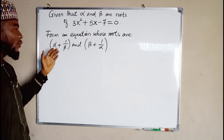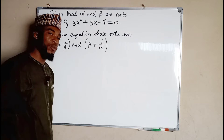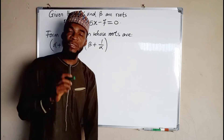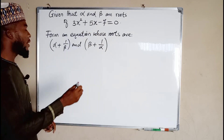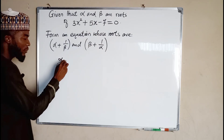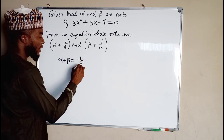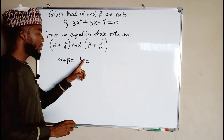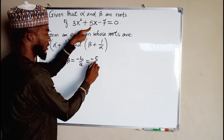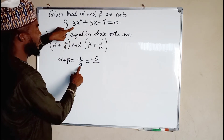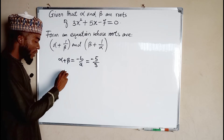We are asked to form another quadratic equation that has these two roots — this is the first root and this is the second root. The very first thing to do is to find the sum and the product of the initial quadratic equation, which is: sum = alpha plus beta, and this is equal to negative B over A. B is the coefficient of the middle term, which we have here as 5, so we have negative 5 divided by the leading coefficient, which we have here as 3.